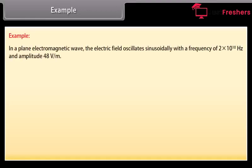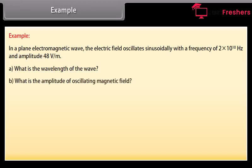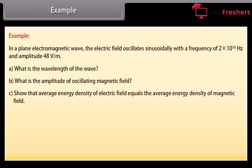Example: In a plane electromagnetic wave, the electric field oscillates sinusoidally with a frequency of 2 × 10¹⁰ Hz and an amplitude of 48 V/m. What is the wavelength of the wave? What is the amplitude of the oscillating magnetic field? Show that the average energy density of the electric field equals the average energy density of the magnetic field.